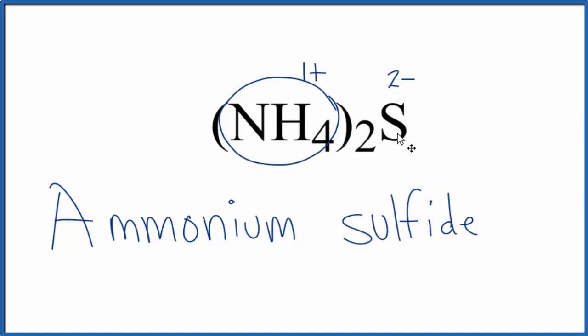Since sulfur, that's in group 16, sometimes called 6A on the periodic table, sulfur always has 2 minus ions. You need 2 of these ammonium ions here, that's why the 2 is here, 2 of these to get 2 plus to balance the 2 minus.